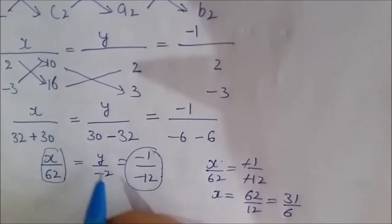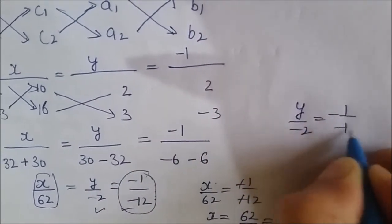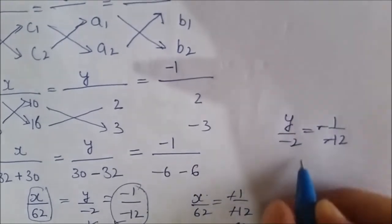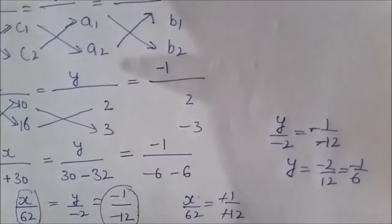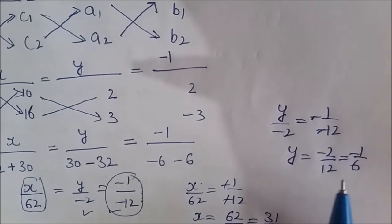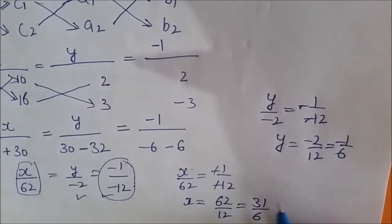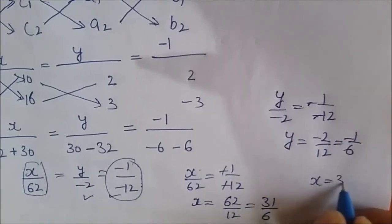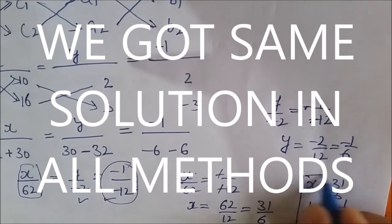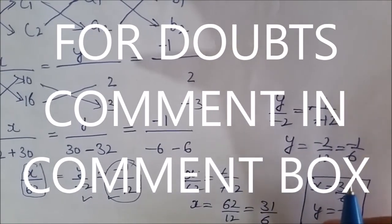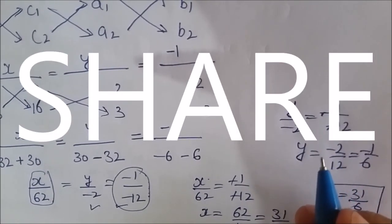We have the same solution regardless of the method — whether substitution, elimination, or cross multiplication. Our answer remains the same: x equals 31 upon 6 and y equals minus 1 upon 6. I hope you understood these methods clearly. If you have any doubt, you can write in the comment box. If you like this video, please subscribe to my channel, share it with your friends. Thank you.